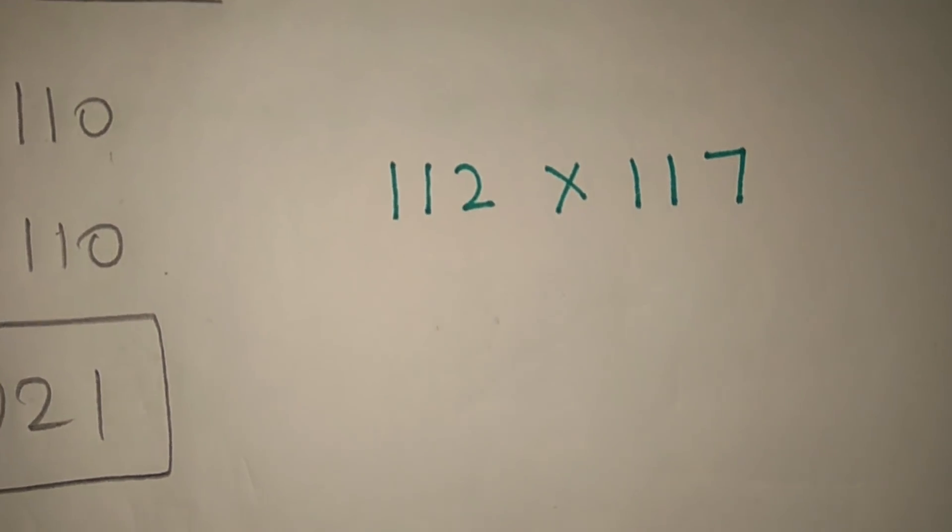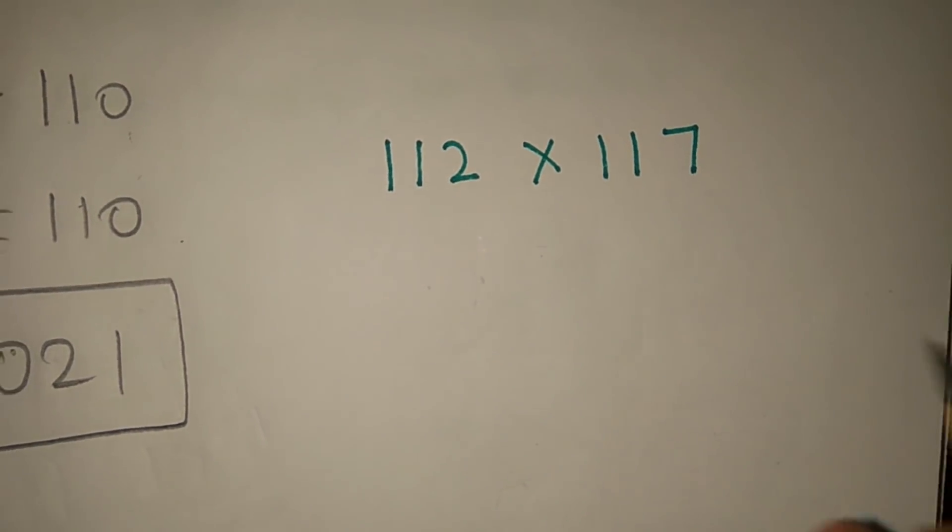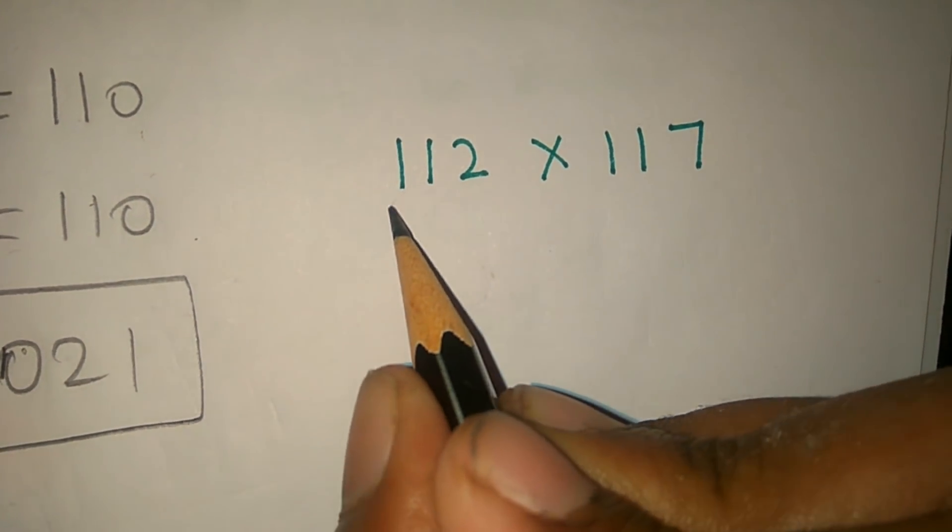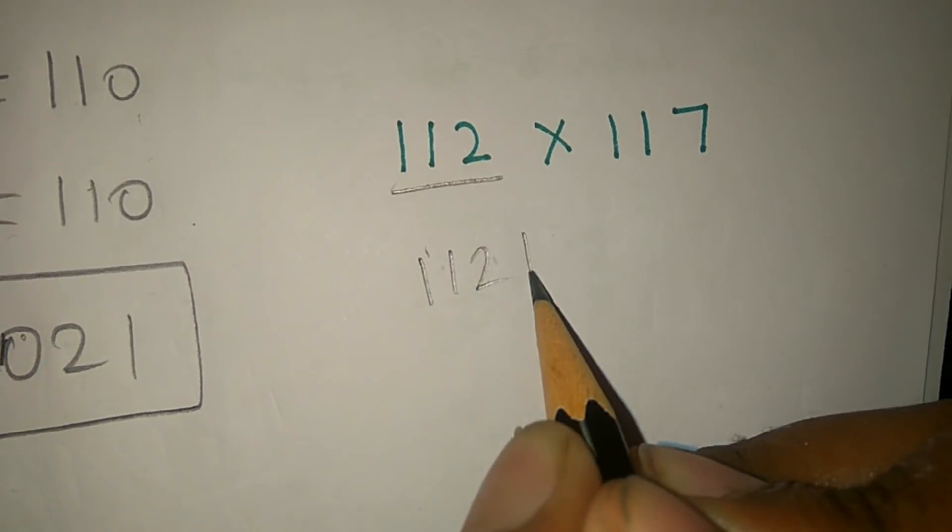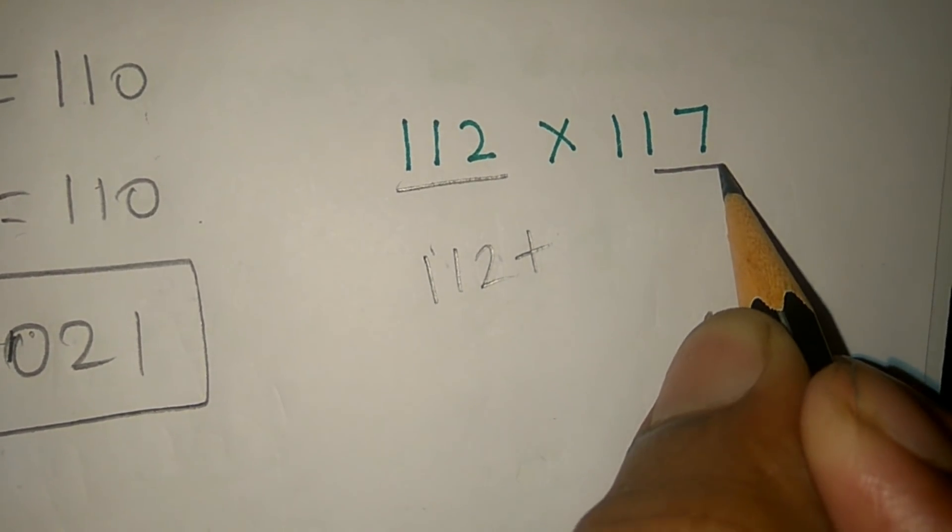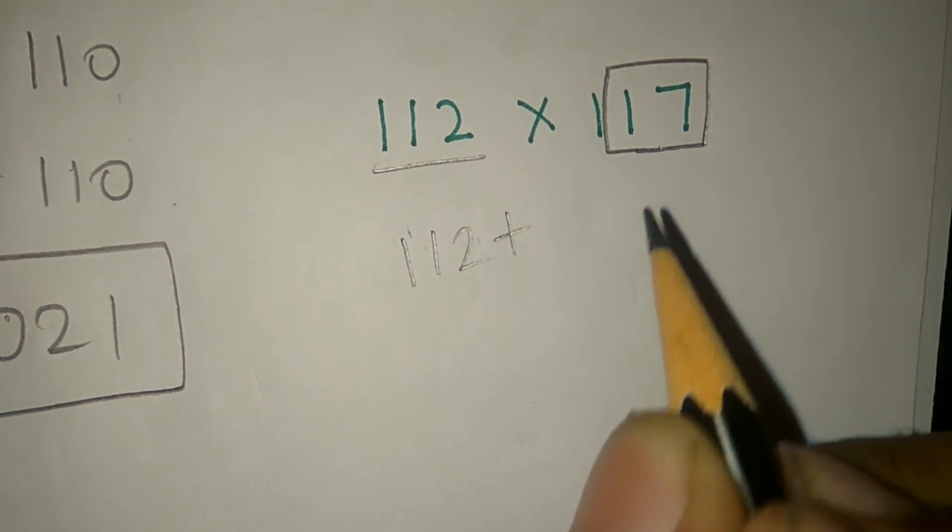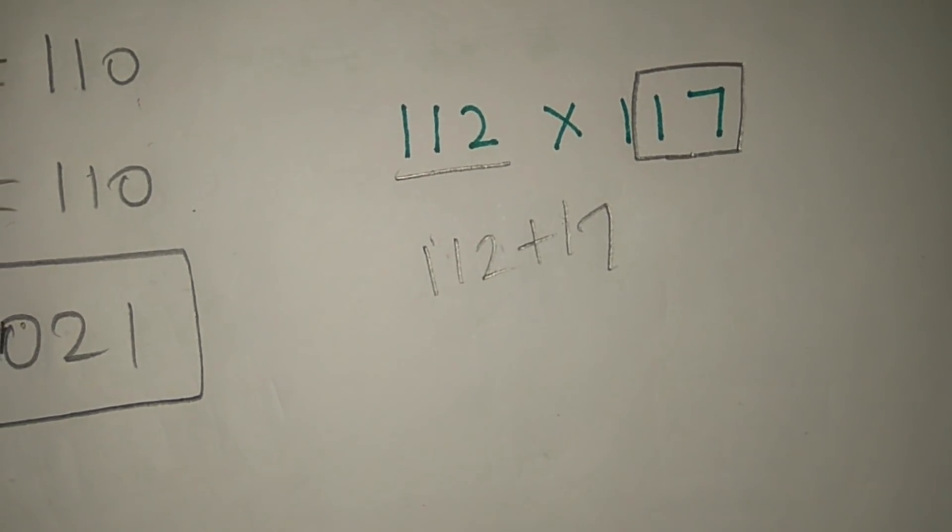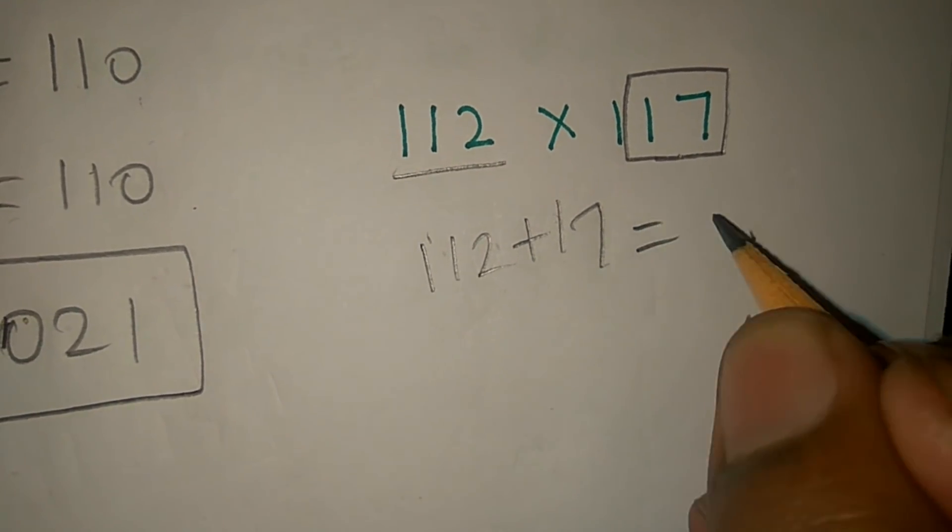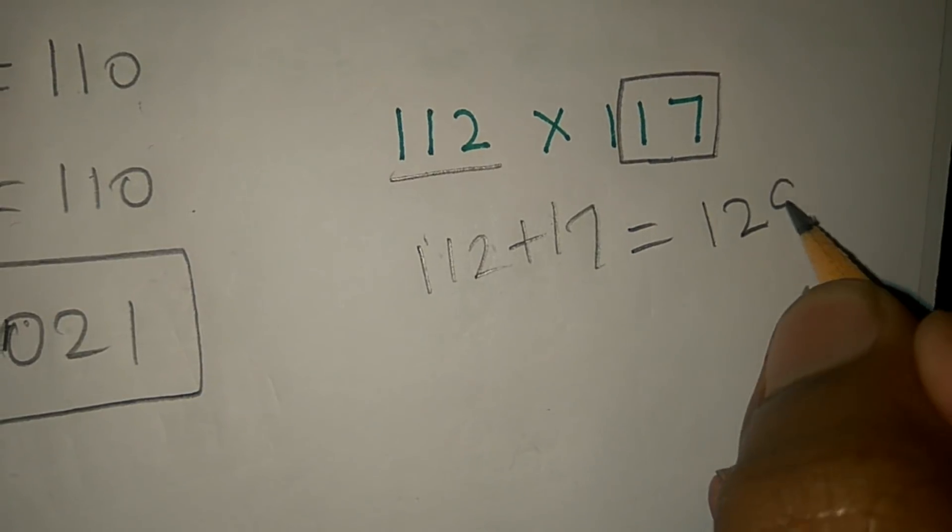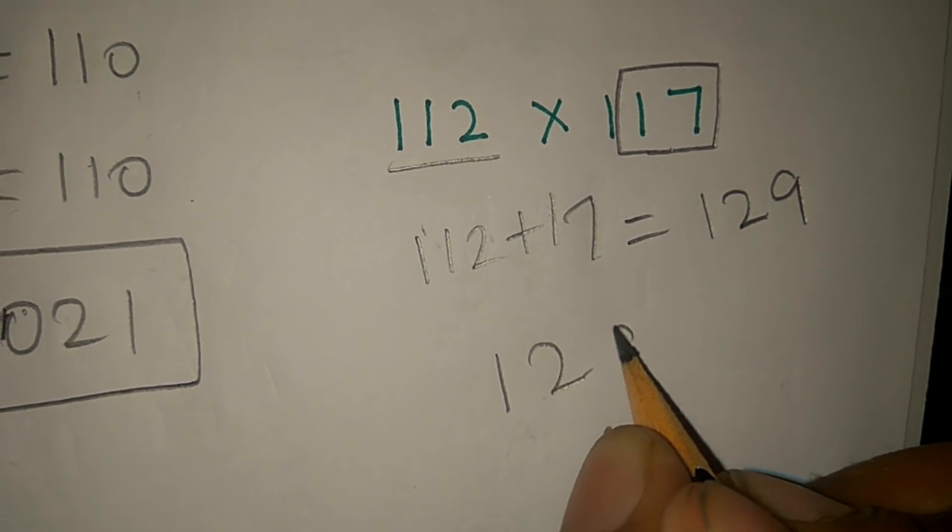Let's do 112 x 117. How do we solve this? 112 plus 17 is 129. So plus 17, 112 plus 17 is 129.